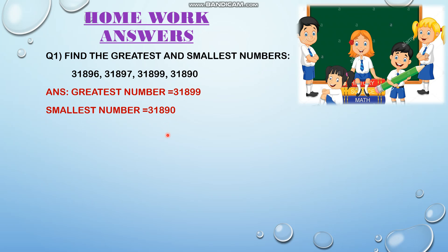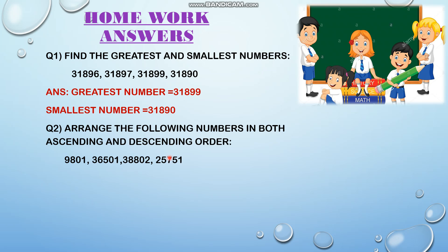Now let's move to the second homework question: arrange the following numbers in both ascending and descending order. The numbers are 9,801; 36,501; 38,802; and 25,751. Here all the numbers are not having the same number of digits. The first number is a four-digit number and all others are five-digit numbers. Keep that in mind when you compare and arrange.